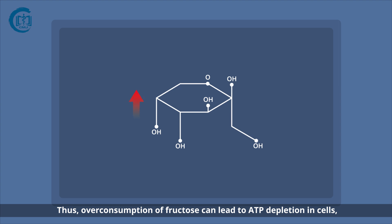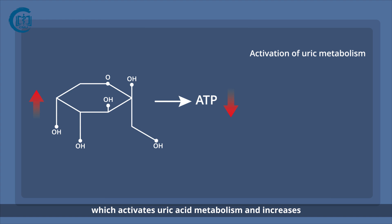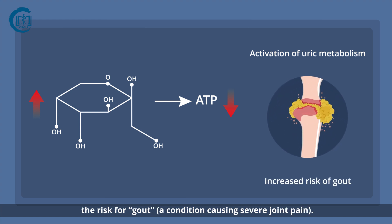Thus, overconsumption of fructose can lead to ATP depletion in cells, which activates uric acid metabolism and increases the risk for gout, a condition causing severe joint pain.